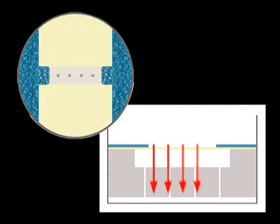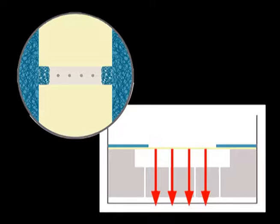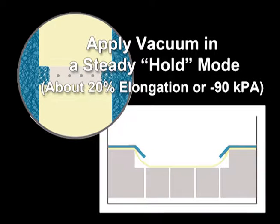Vacuum is applied to the culture plates with a Flexcell tension system, which pulls the rubber bottom membranes of the tissue train culture plates downward into a linear trough mold.